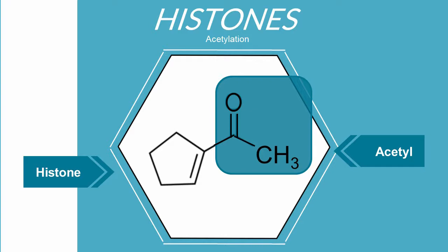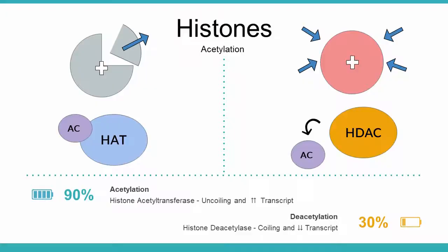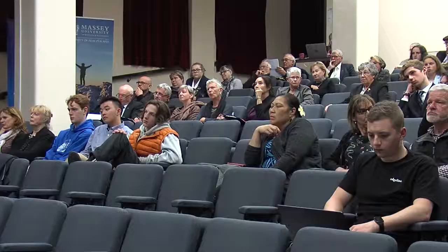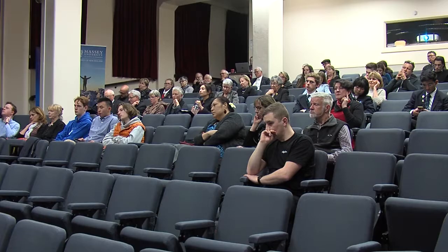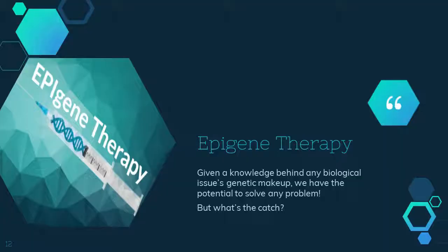We can induce this histone modification through a process of acetylation — adding or removing acetyl groups from the histone, causing changes in chemical electrostatic attractions, leading to the winding or unwinding of chromatin. This is mediated through enzymes. Histone acetyltransferase, or HAT, boosts transcription by adding an acetyl group to the histone, weakening its positive charge, reducing the force of attraction so the chromatin loosens. On the other hand, histone deacetylase removes the acetyl group, giving the histone a more positive charge, strengthening attraction, tightening the chromatin, and therefore inhibiting transcription.